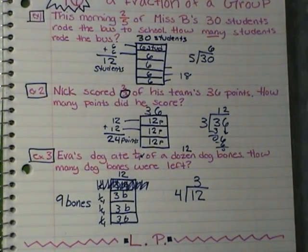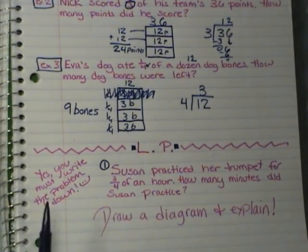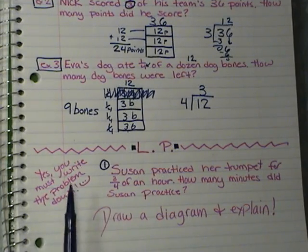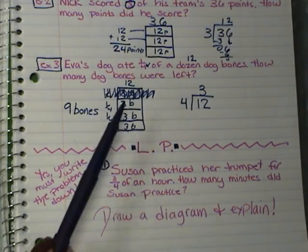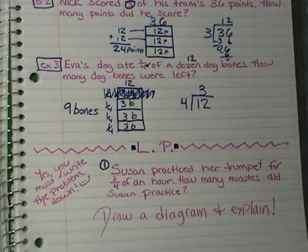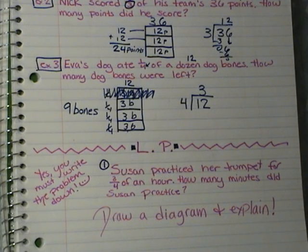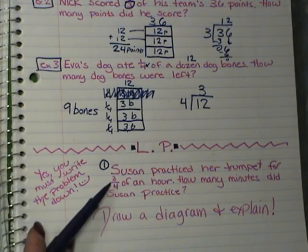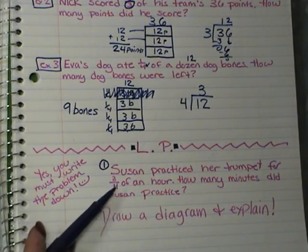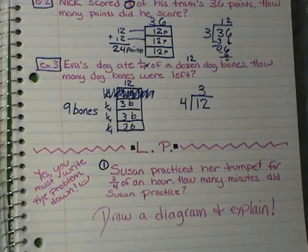Here is your lesson practice. You must write the problem down and do a diagram like we did for the other problems. I know some of you might just know the answer right away, but I really want you to draw the diagram and practice using it. It says: Susan practiced her trumpet for three-quarters of an hour. How many minutes did Susan practice? Draw a diagram — remember, you're going to divide it into fourths and then you want three pieces.